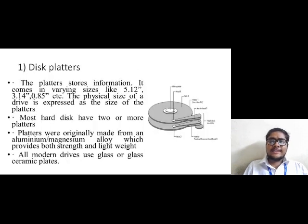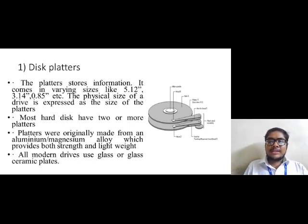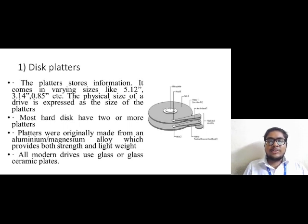First, let's discuss disc platters. These are round circular platters that generally store information. They come in varying sizes, around 5.12 inches, 3.14 inches, 0.85 inches, etc. The physical size of the drive is expressed as the size of the platters. Most hard disk drives have two or more platters and they are originally made of aluminium-magnesium alloy, which provides both strength and light weight.